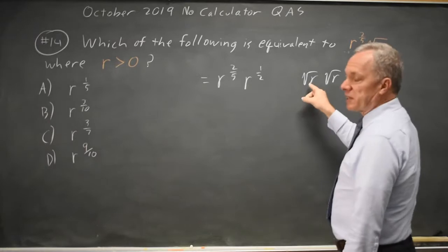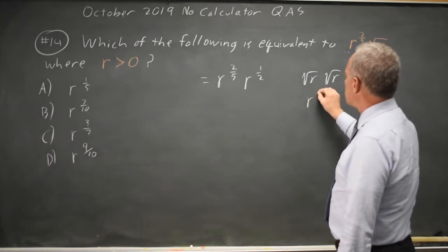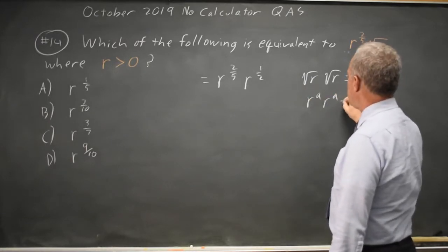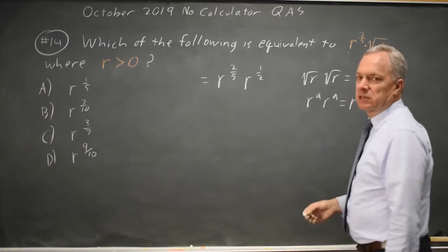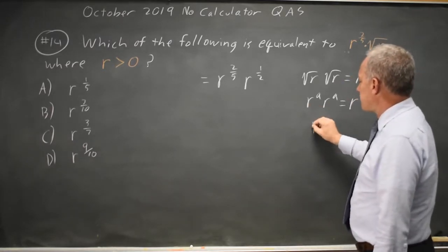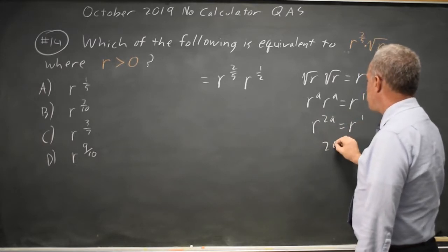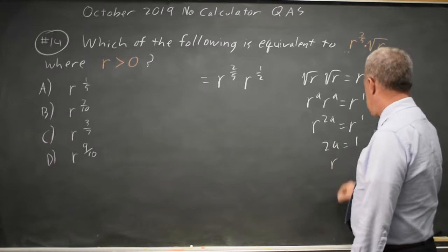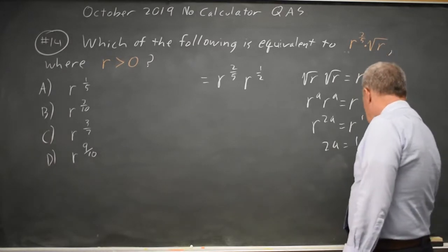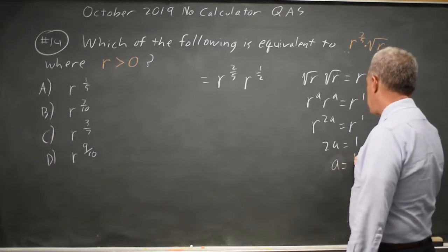So whatever this exponent is, r to the a, r to the a equals r to the 1. But powers of the same base you add exponents, that's r to the 2a equals r to the 1, so 2a equals 1, a equals 1 half.